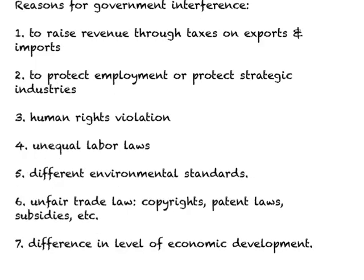We know that foreign trade has a positive influence on GDP, but we also find government interference in foreign trade, and this is a fact of life. There are several reasons why a government may choose to interfere. One traditional reason is that the government needs money to finance its expenditure on things like defense and construction, so they may impose taxes on exports and imports to raise revenue.